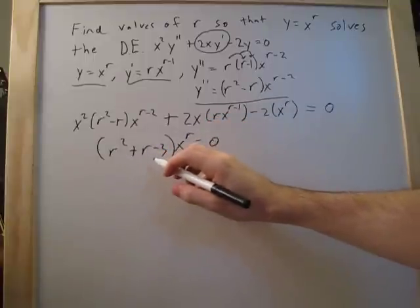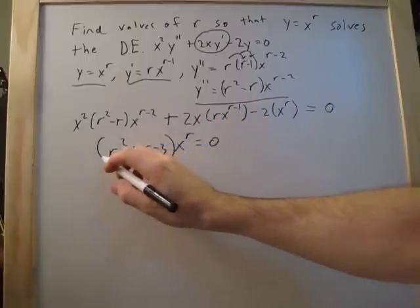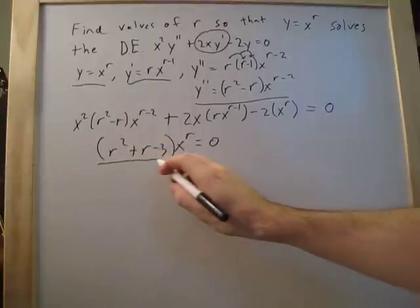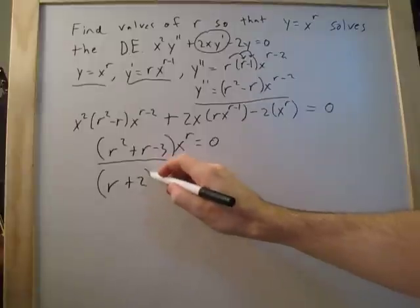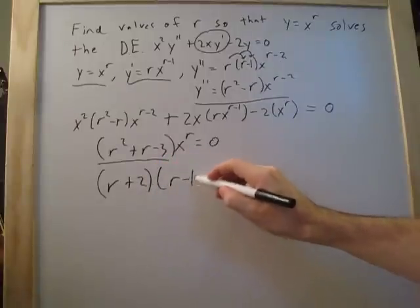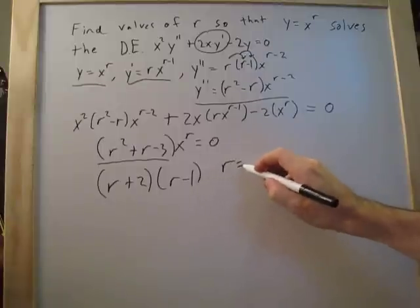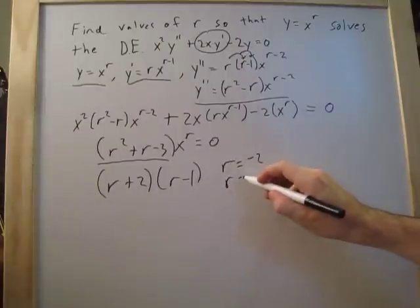And then from this, we can factor out this equation right here. So this ends up becoming r plus 2 and r minus 1, so we find out that r equals negative 2, and r equals positive 1.